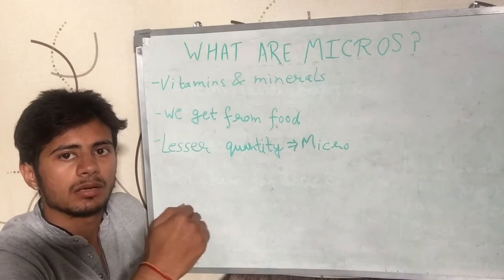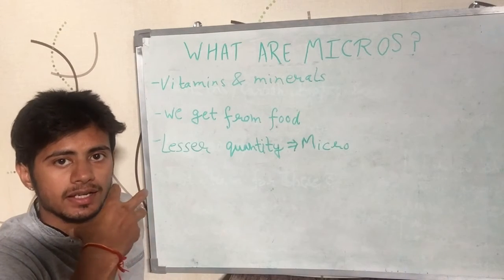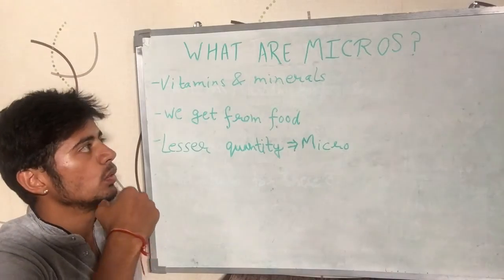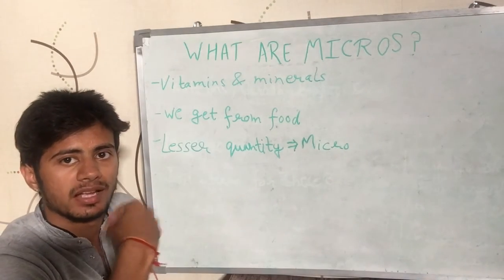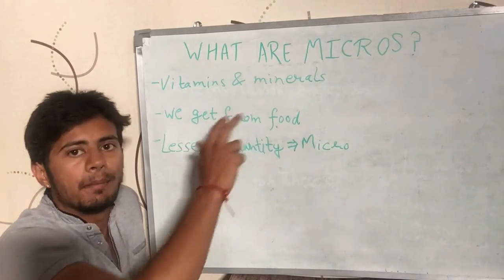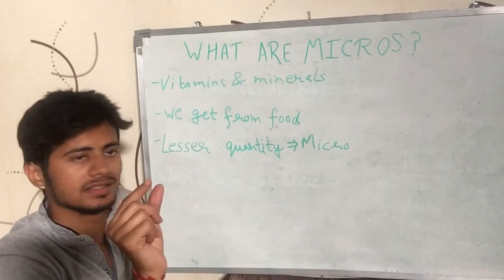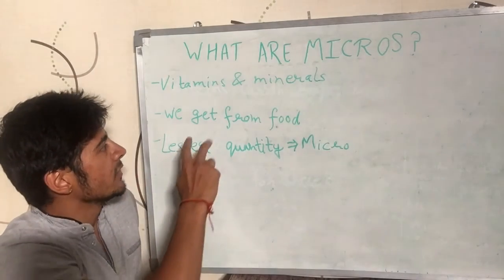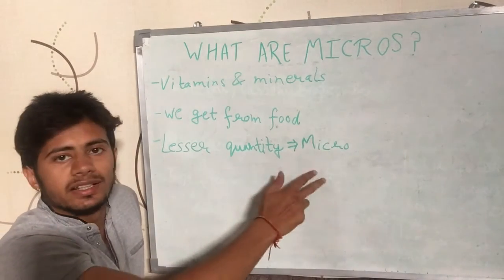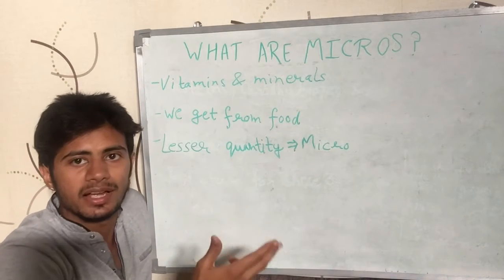The macros — protein, carbohydrates and fats — are required in larger quantities as compared to vitamins and minerals by our body. These are called micros because they are required in lesser quantity. We get them from the food. Lesser quantity gives it the name micro.